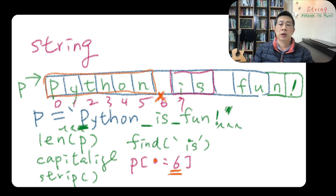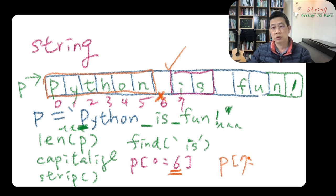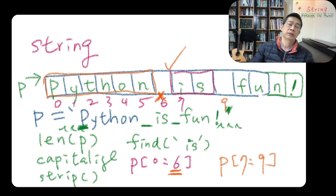So this feature we call slicing. If you want to slice this, you can use P[7] till this is 9, things like this.